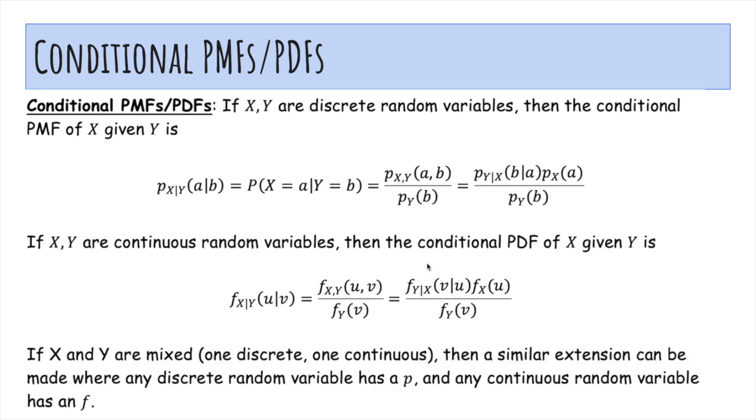And if X and Y are mixed, so one is discrete, one is continuous, then a similar extension can be made, where any discrete random variable has a p and any continuous random variable has an f, and you can figure that out yourself.